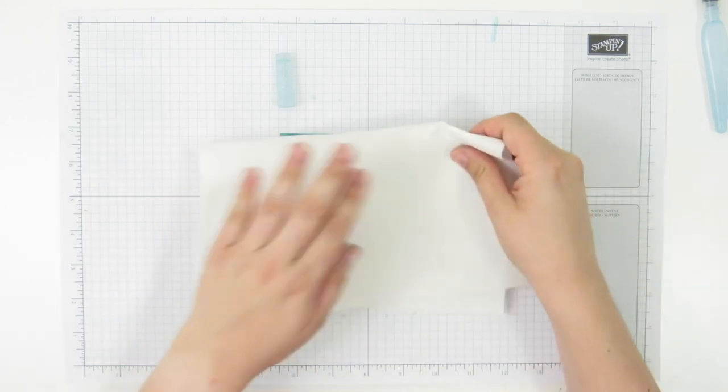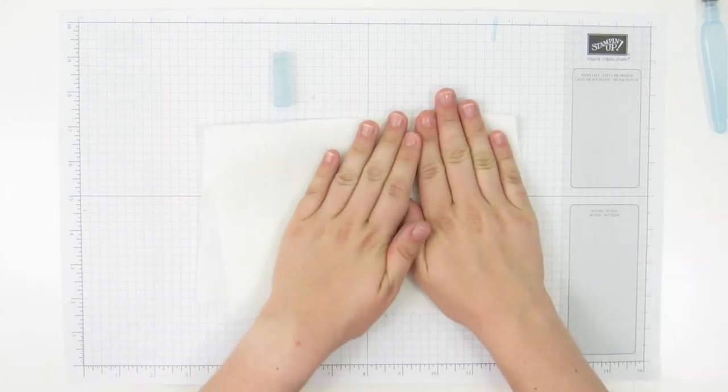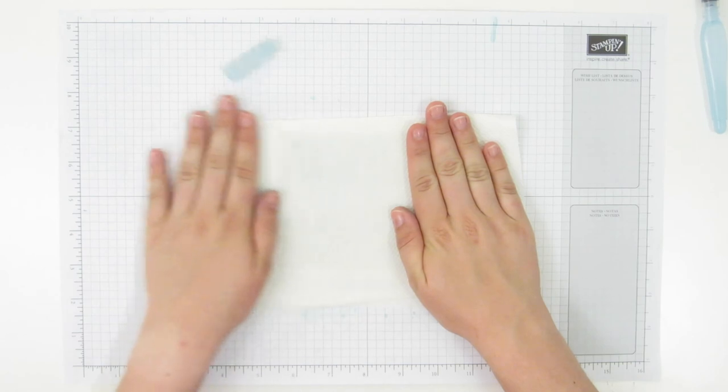Now the one last thing that I like to do is dry it off a little bit. So I'm just going to blot it with some paper towel. That's going to dry it a bit.